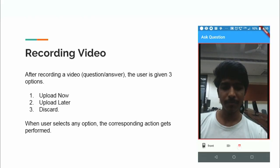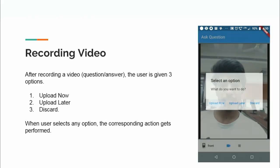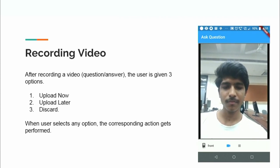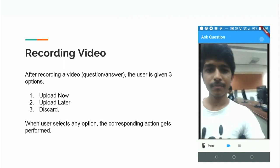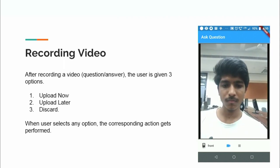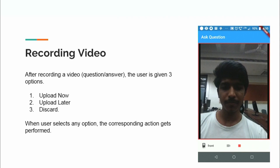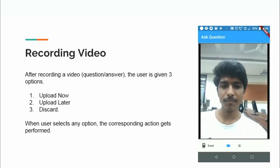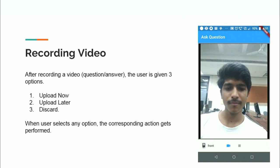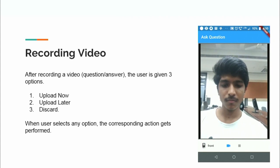On the recording video page, there are three buttons at the bottom. The first toggles between the front and back camera. The blue button starts video recording — a message displays that recording has started. The red button stops the recording. After recording, the user is presented with three options: Upload Now, Upload Later, and Discard. Upload Now uploads the video to the server along with the video name, user gender, user ID, and topic, all stored in the database.